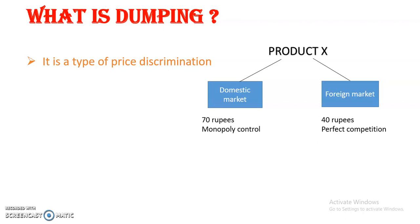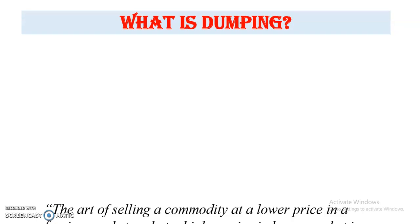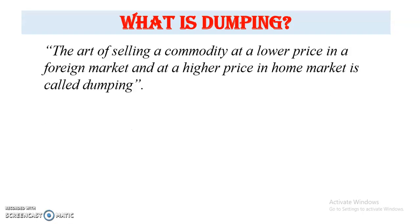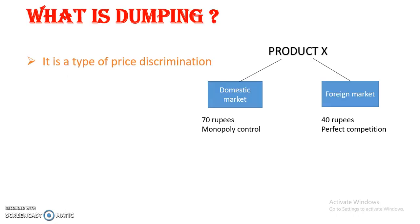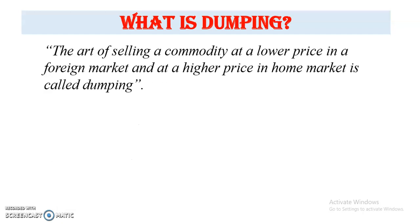Another objective is to take advantage of differences in the elasticity of demand. So this is our dumping. Dumping is the act of selling a commodity at a lower price in the foreign market and at a higher price in the home market. This can be seen in the example where in the foreign market we are selling at a low price and in the domestic market we are selling at a higher price.